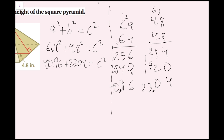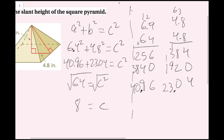When I add these up, I know the 0.96 and 0.04 add up to 1, so this is really like 41 plus 23, which gives me 64 equals C squared. Taking the positive square root of both sides — because I can't have a negative side length — gives me C equals 8, since 8 times 8 is 64. My unit is inches. We've successfully found the slant height of this pyramid using the Pythagorean Theorem.